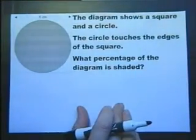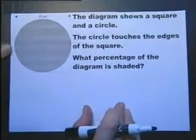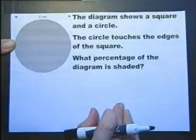The diagram shows a square and a circle. The circle touches the edges of the square. What percentage of the diagram is shaded?